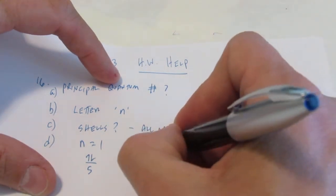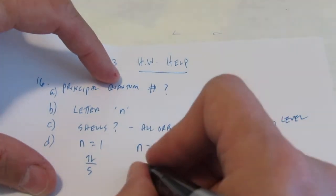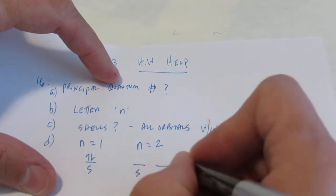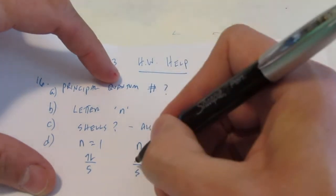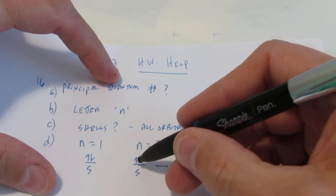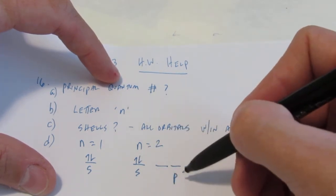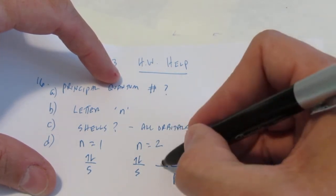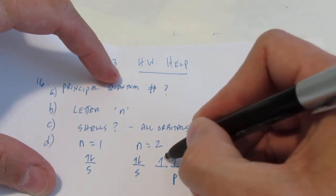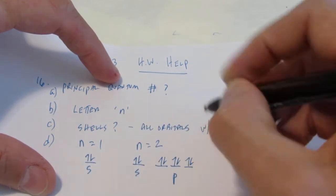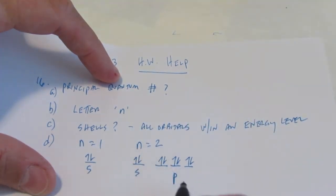When N equals 2, you better know that there are two sublevels, S and P. Now the S can hold a pair, but the P sublevel has three orbitals, they can each hold a pair. So on the second energy level I can hold a total of eight electrons.